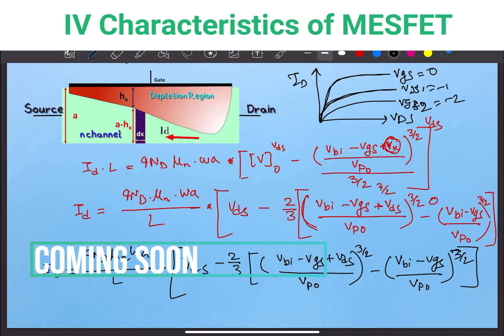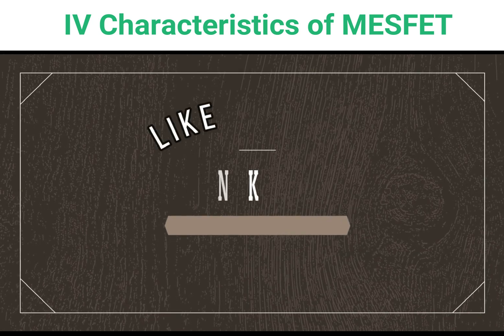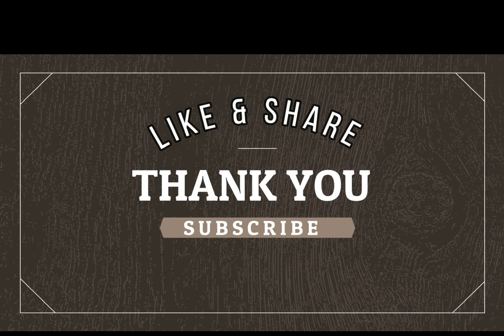This video is already quite long, so in our next video we will derive the current-voltage characteristics equation. We will analyze the tapered shape of the depletion region to calculate the value of the drain current. Thanks for your time — please share this concept with your friends, and if you liked this video, press the like button.